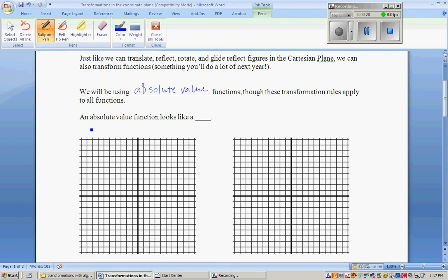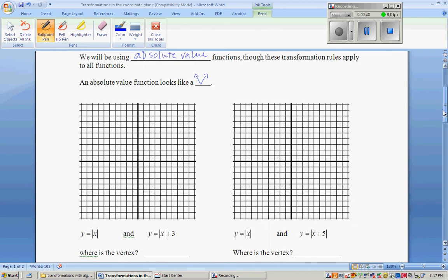An absolute value function looks like a V. And so what I want you guys to do, and you may need to hit pause in order to follow along, but we are going to graph what is called a parent function. So you're going to graph Y equals the absolute value of X. And you're going to do that by just making a quick XY table. We're going to choose negative points and positive points. And remember, it's supposed to look like a V.